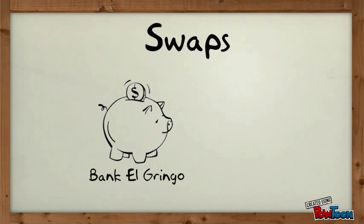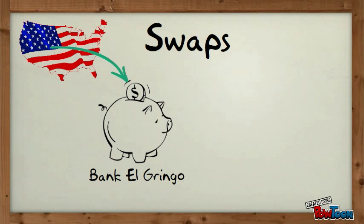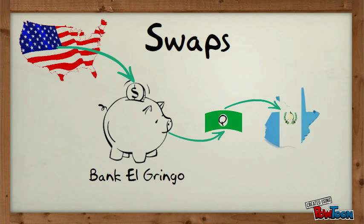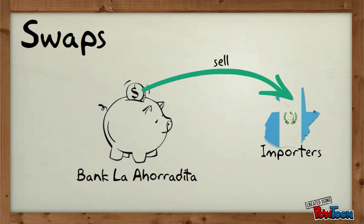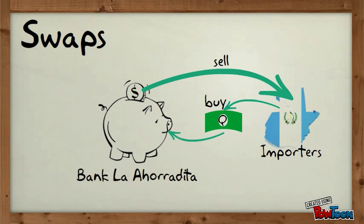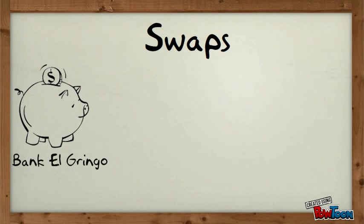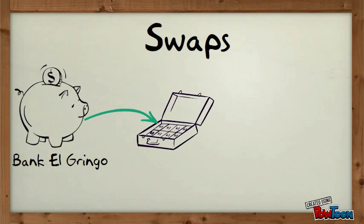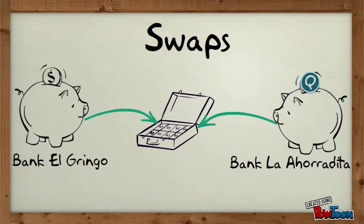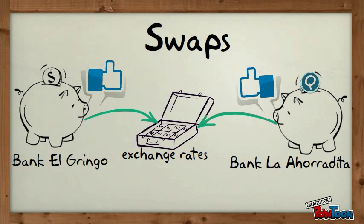For example, Bank El Gringo receives all the remittance from the United States in dollars, and they pay Guatemalans in Quetzales. On the other hand, Bank La Horradita sells dollars to Guatemalan importers, who pay in Quetzales. Both agree upon a swap to make profit out of their individual exchange rates. Bank El Gringo offers a more attractive exchange rate than the market to Bank La Horradita. Therefore, Bank La Horradita can offer a more attractive exchange rate to the Guatemalan importers than the market does.